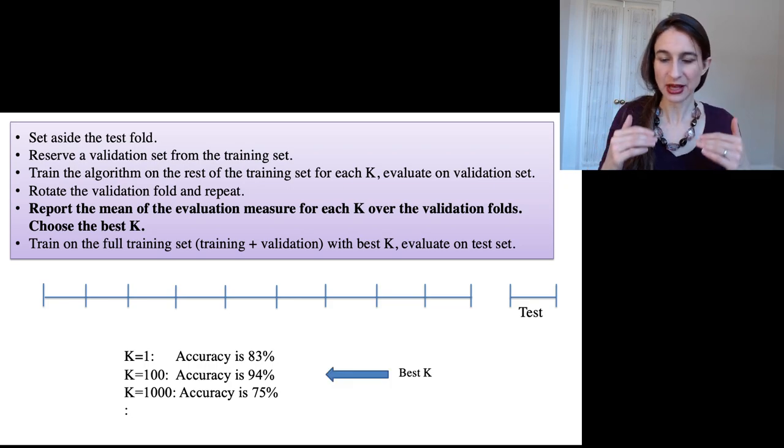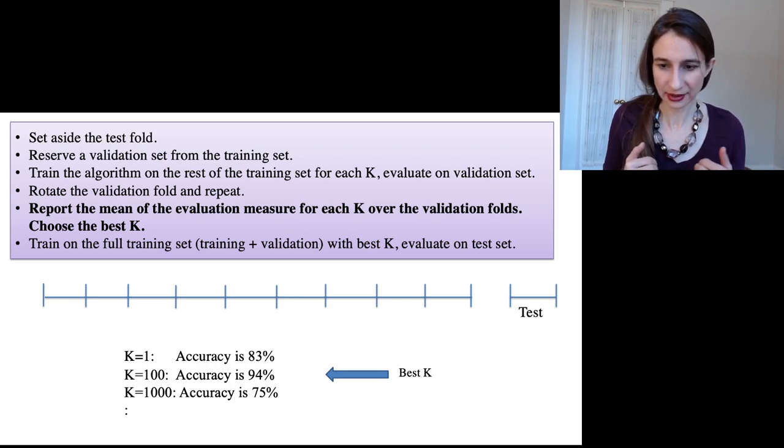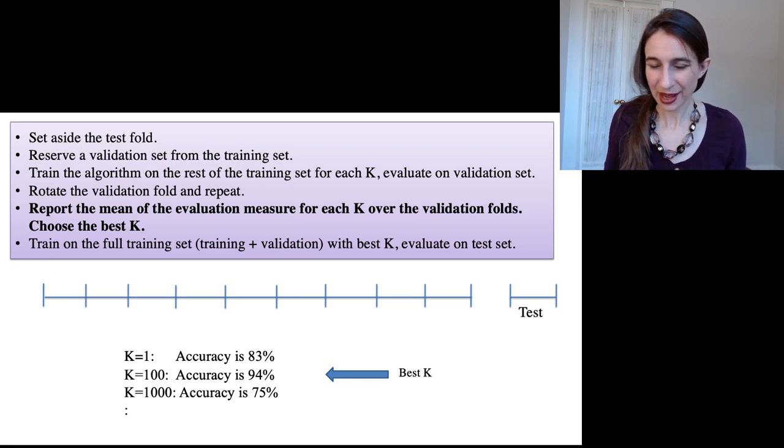Here, let's say I evaluated the accuracy over the different validation folds of each K, and I happen to find that K equals 100 gave the best value.